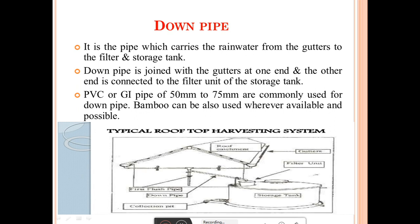The next component is the down pipe. The down pipe carries the rainwater from the gutters to the filter and to the storage tank. This down pipe is joined with the gutter at one end and the other end is connected to the filter unit of the storage tank. PVC or GI pipe of 50mm to 75mm (2 inch pipe) are commonly used for the down pipe. Bamboo can also be used wherever available.